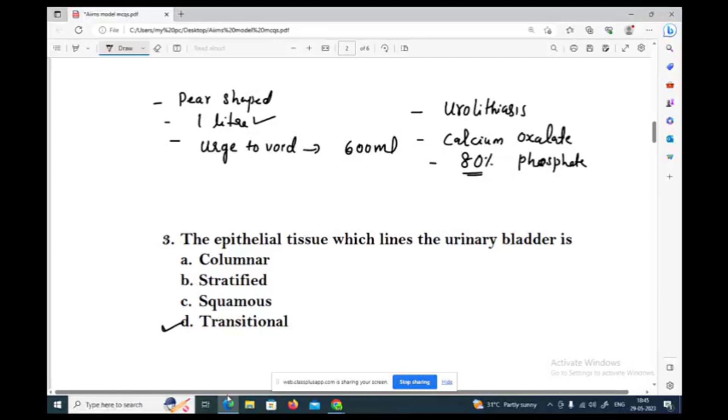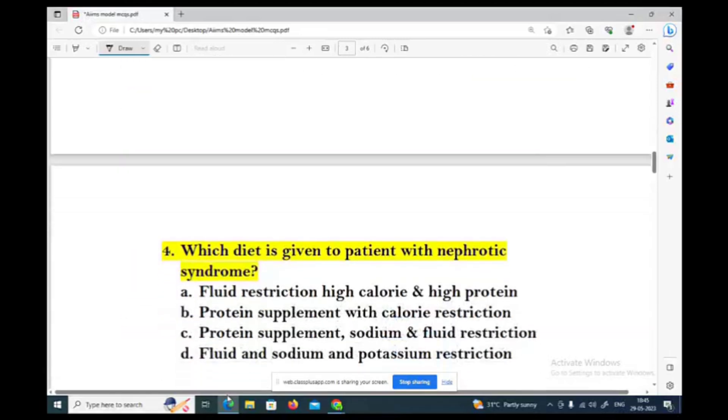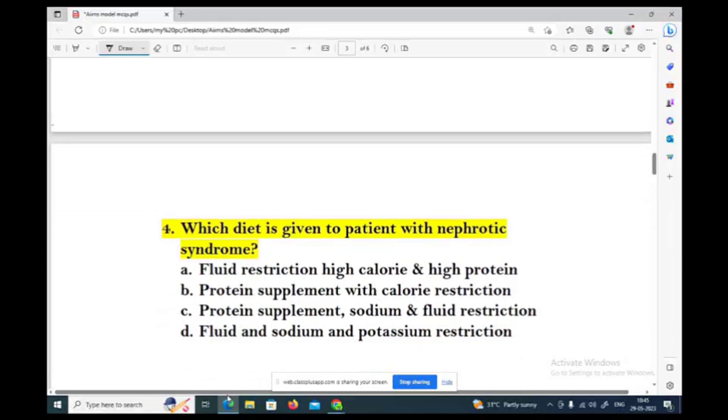Which diet is given to patient with nephrotic syndrome? Options: fluid restriction and high calorie and high protein, protein supplement with calorie restriction, protein supplement sodium and fluid restriction, fluid and sodium and potassium restriction.